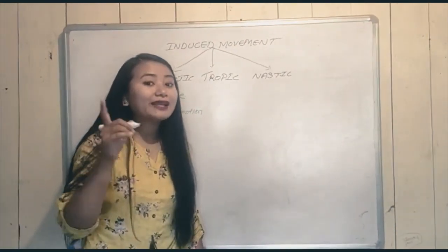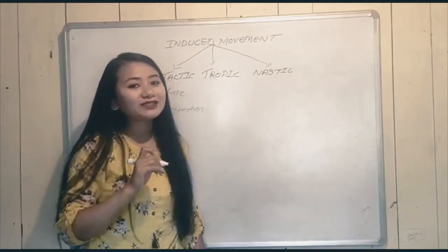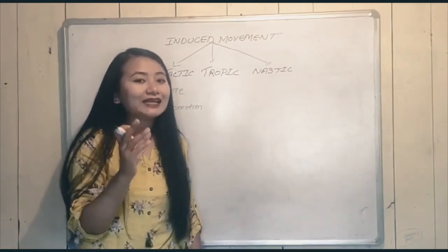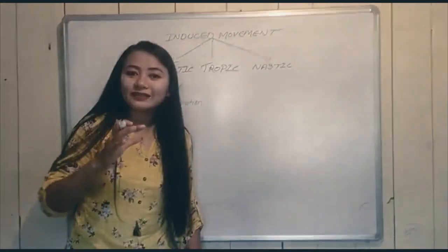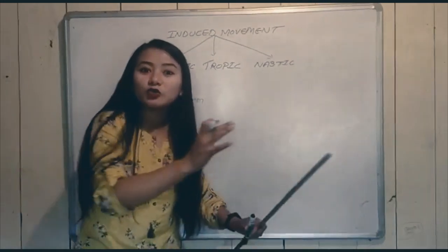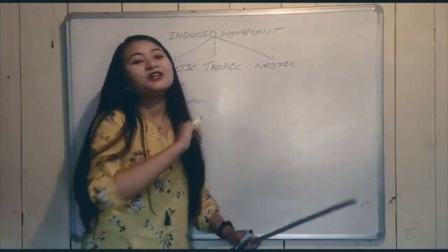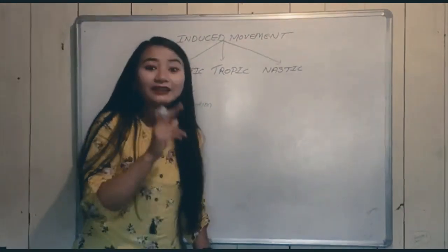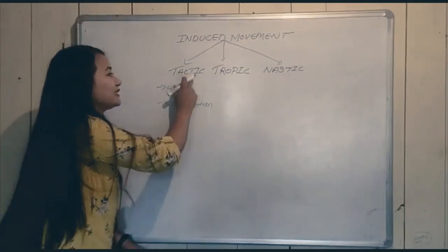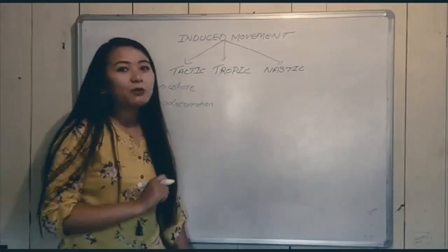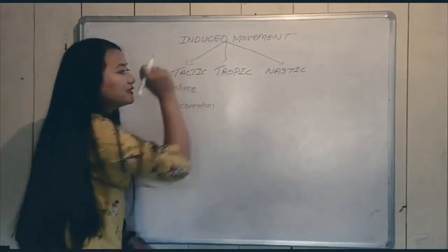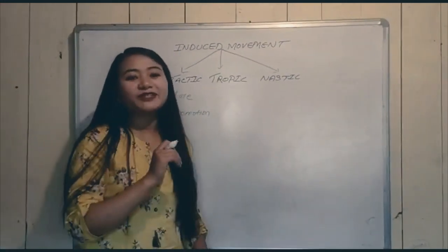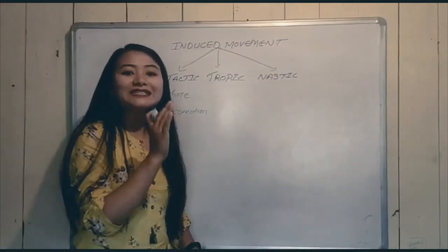For example, like we discussed in the last class, Chlamydomonas — a green algae — can swim from one place to another and change its position. That type of movement is called tactic movement.